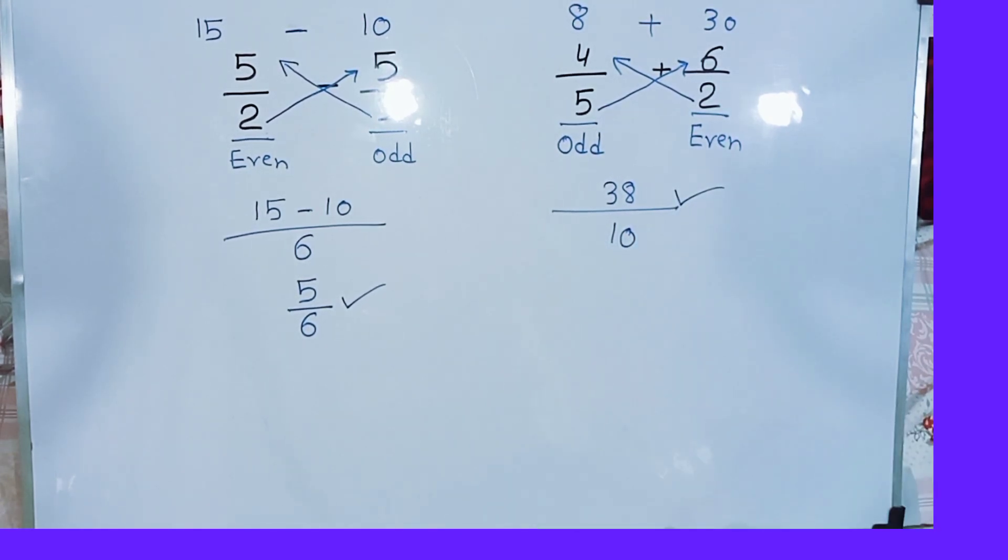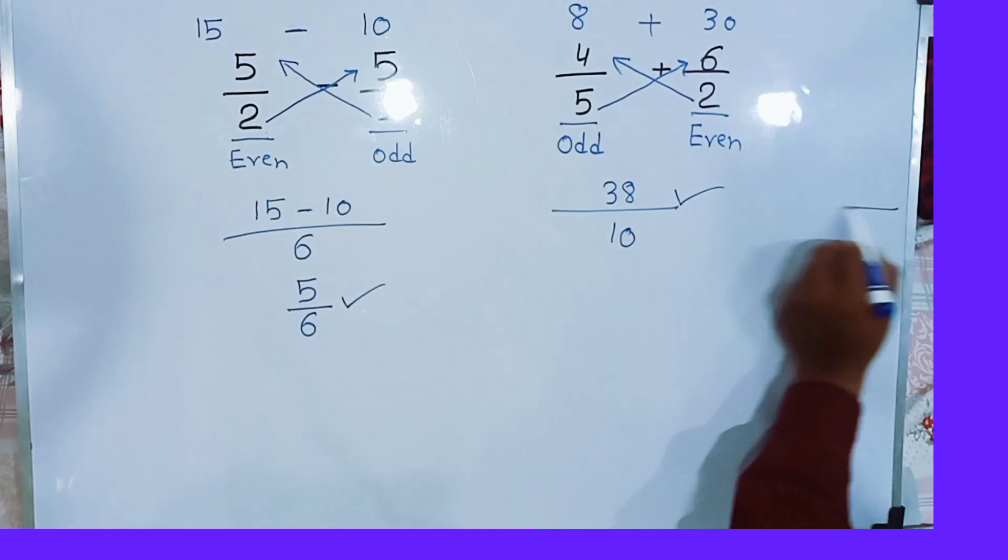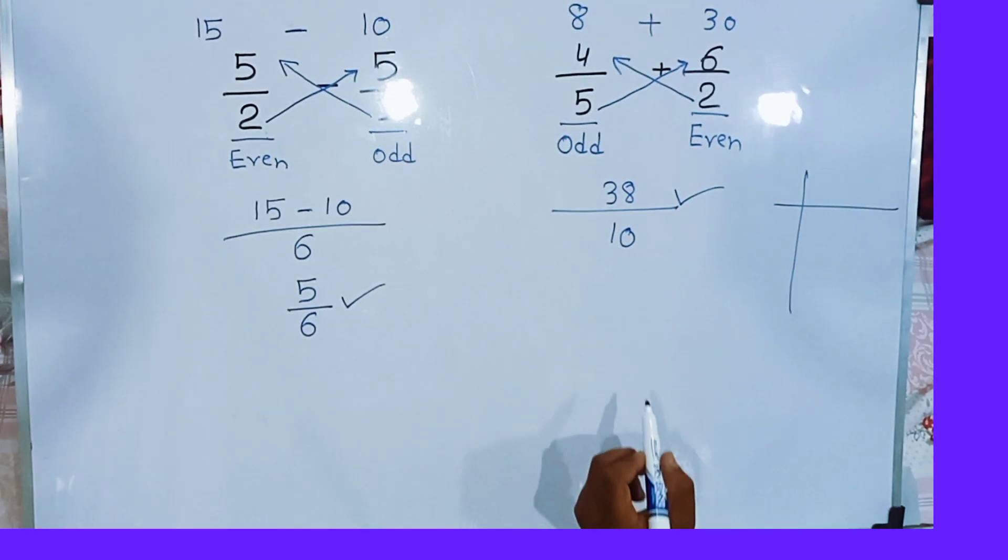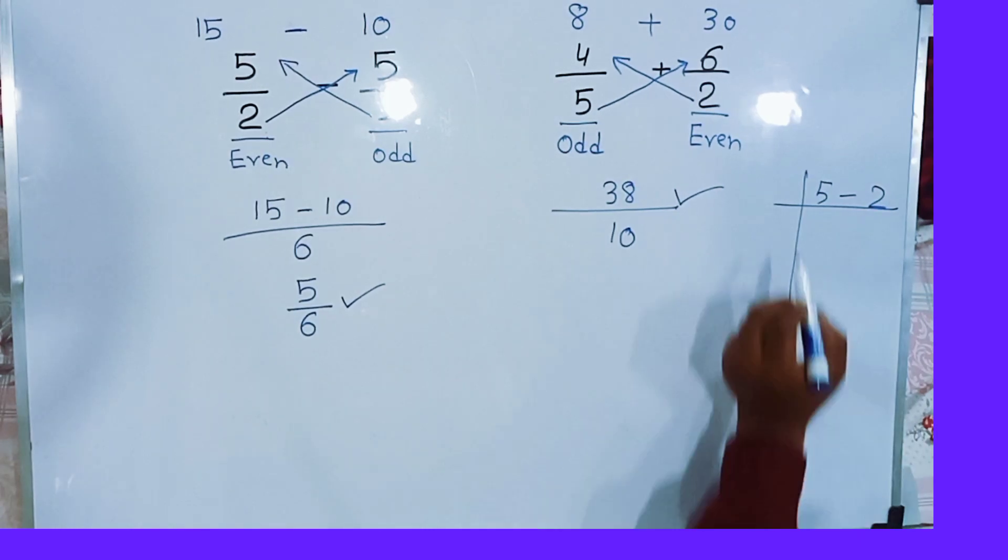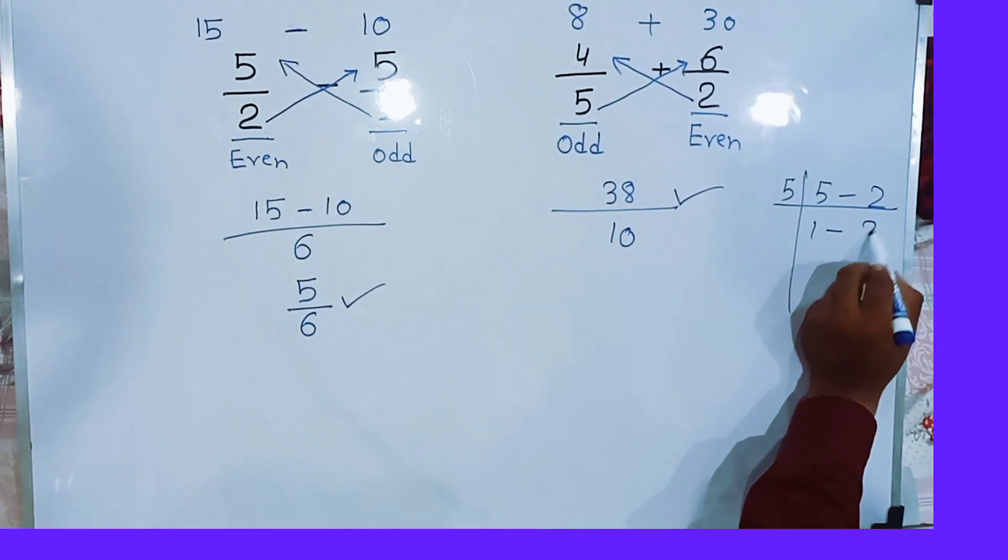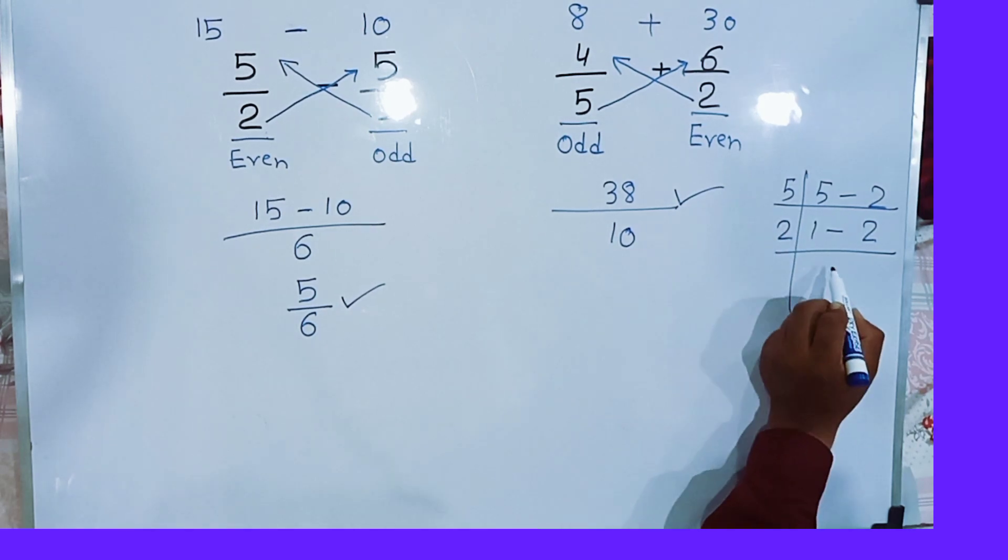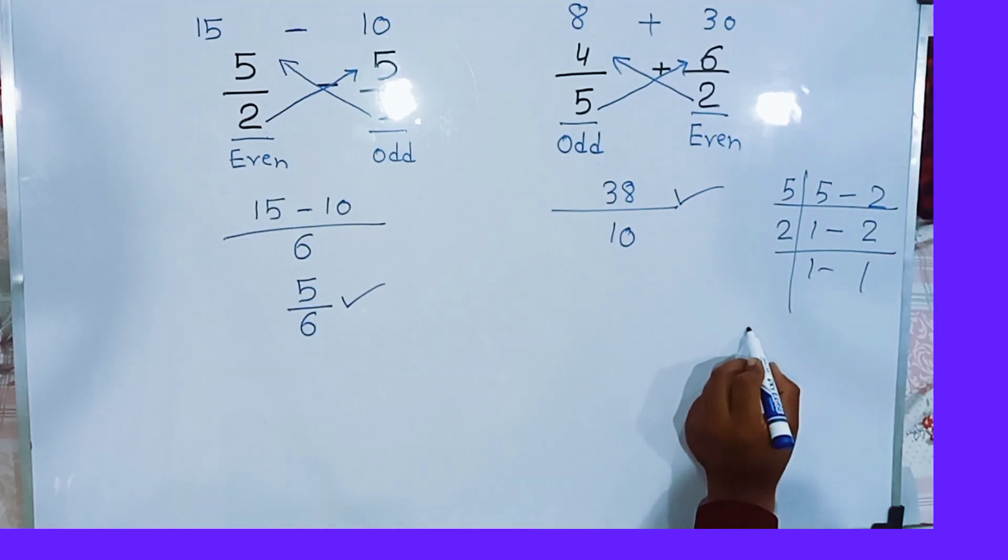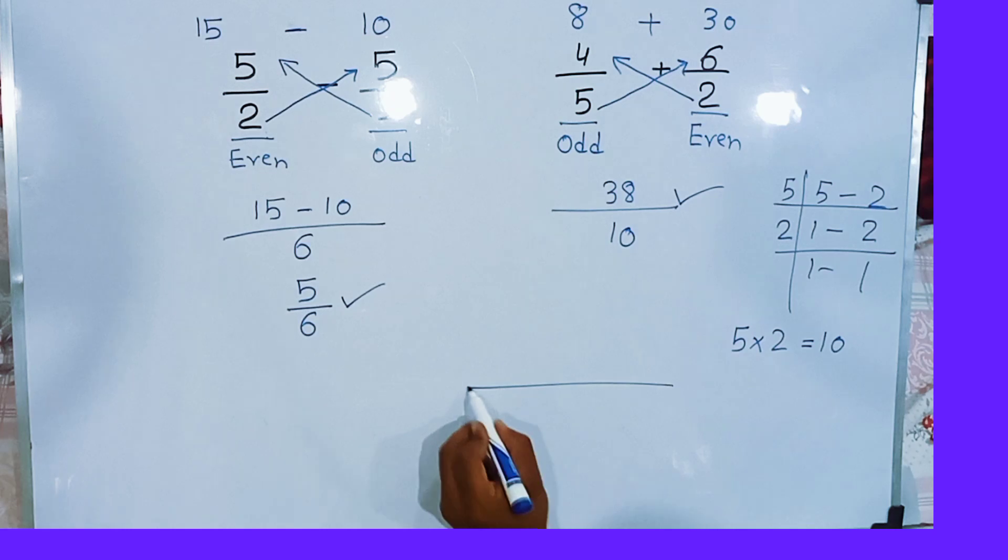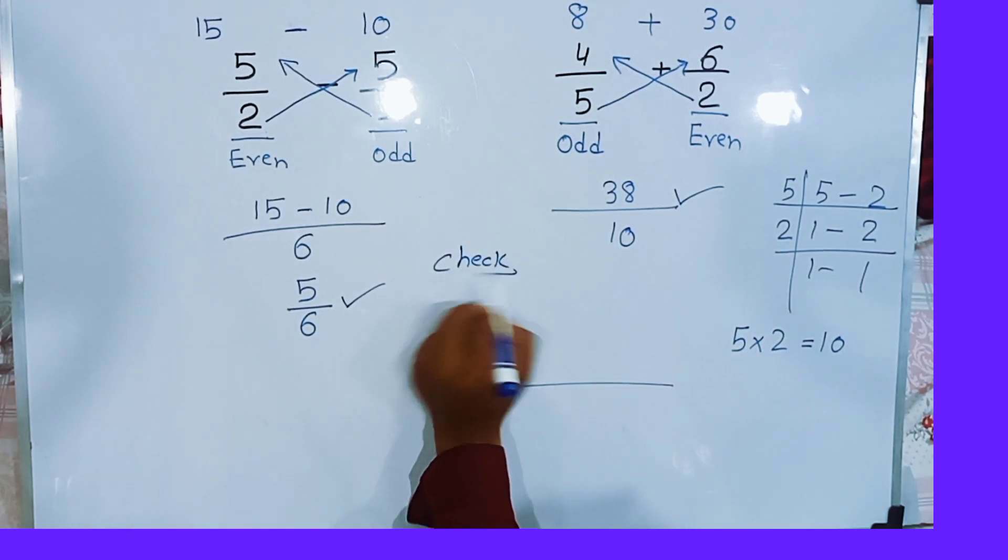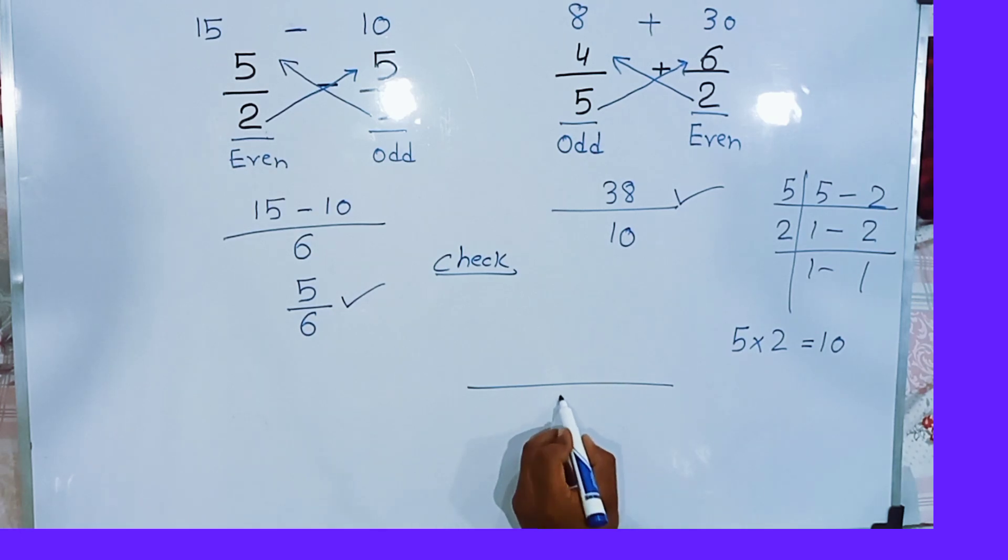If you want to check this answer, you will find the least common multiple of 5 and 2. 5 ones are 5, and 2 remain same. 1, 2, ones are 2. Then 5 multiplied by 2 is equal to 10. Now check, 10 is the denominator.